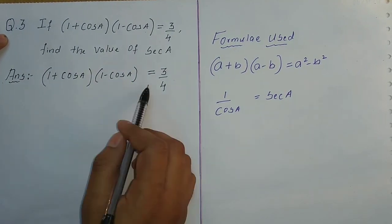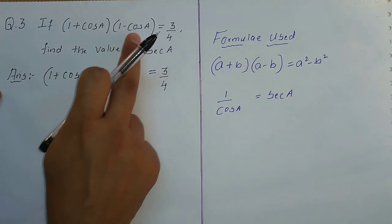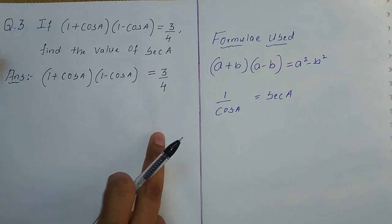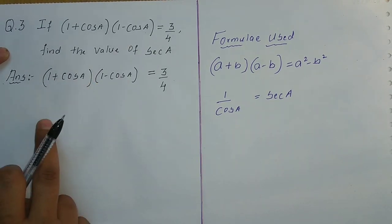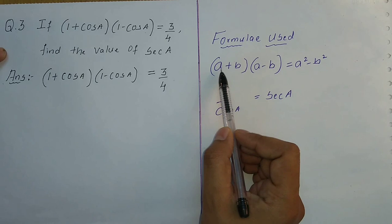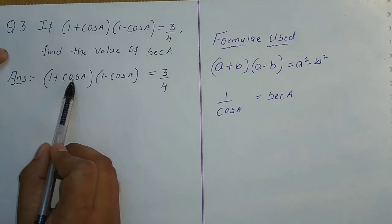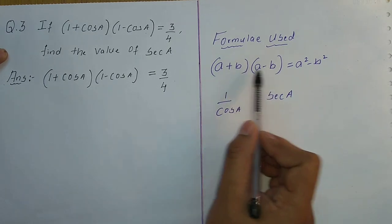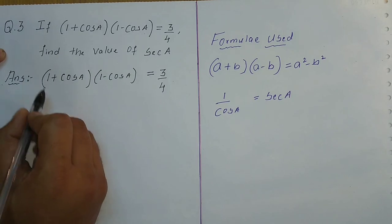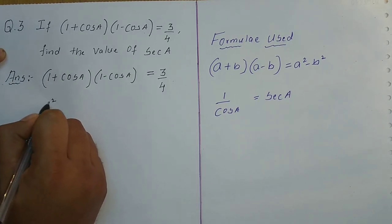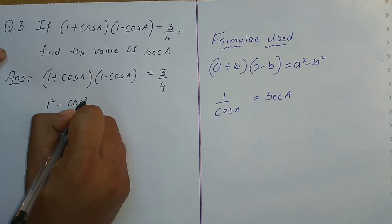So I have already written the given part: (1 + cos a)(1 - cos a) = 3/4. This looks like the formula (a + b)(a - b) = a² - b², where a = 1 and b = cos a. So we get 1² - cos²a = cos²a.